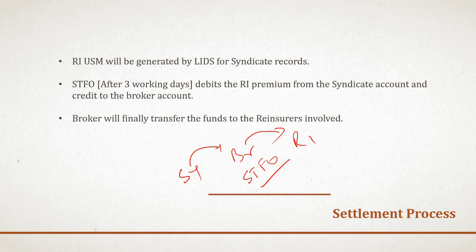The USM stands for Underwriting Signing Message. It is generated when a broker submits the MRC (Market Reform Contract) to XIS for processing of signing data captured on the Lloyd's Insurance Data System. Once risk information is captured, the LIDs system sends the USM message — carrying risk, premium, and all supporting policy information — to all syndicates involved. The STFO, Lloyd's Settlement Trust Fund Office, is a department within the Corporation of Lloyd's managed by DXC Technology through XIS, and XIS submits electronic messages daily to STFO for premium and claim payment settlement.